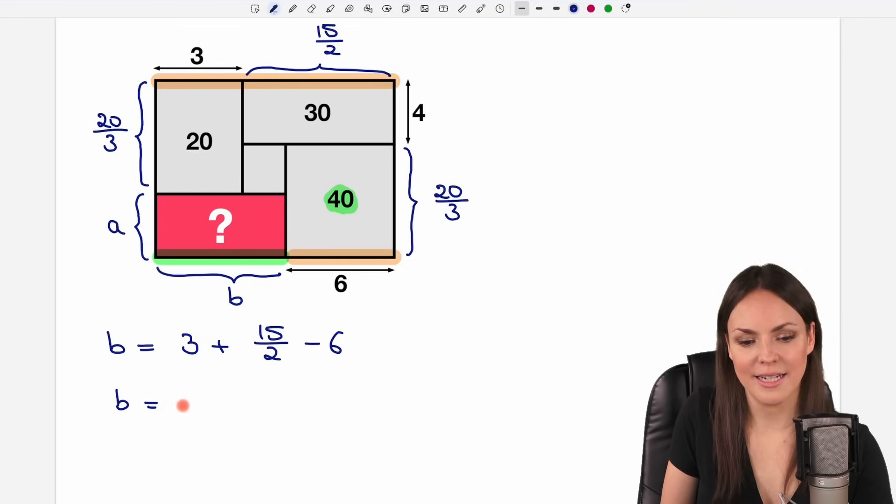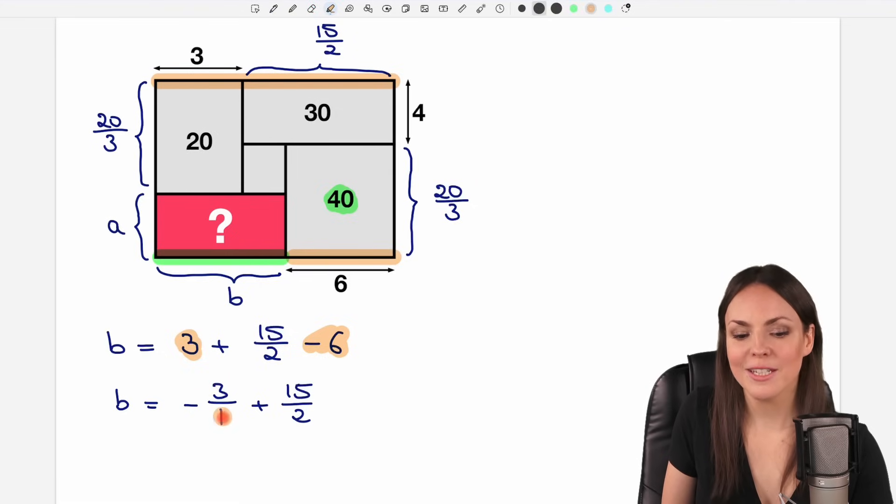My B is then. Maybe I calculate 3 minus 6 first, which gives me negative 3. And then I add the 15 over 2. To add a number to a fraction, I write the 3 as a fraction as well. So 3 over 1. Then the denominators have to be the same. They are not yet. So I have to rename this fraction by multiplying the denominator and numerator by 2.